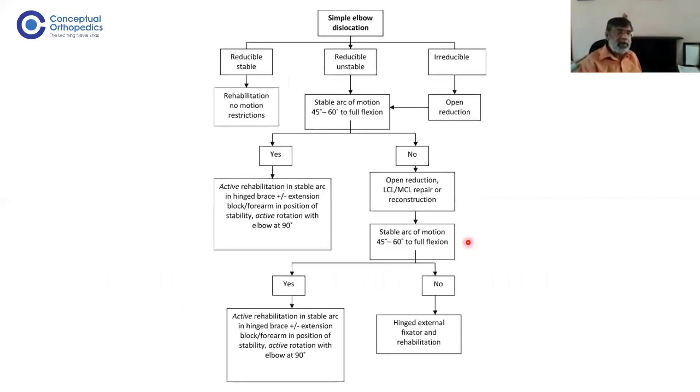If you get a simple dislocation, how do you manage it? You've seen it in clinics: you reduce it, and normally you put a backslab plaster for one to two weeks maximum, then start mobilizing. This is quite a stable joint once reduced, allowing early mobilization.